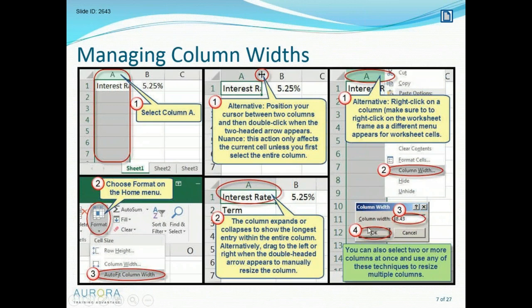One of the first ways to adjust a column width — and probably the longest approach — would be: step one, select column A; step two, go to the Format command on Excel's Home menu; and then step three, choose Auto Fit Column Width. That would widen the column so you can see the words 'Interest Rate' in their entirety. That approach works fine.